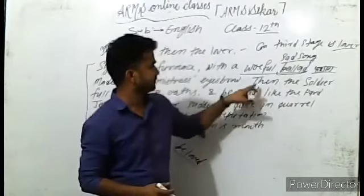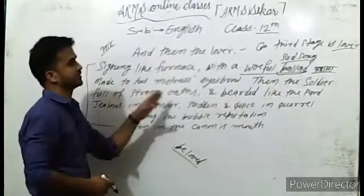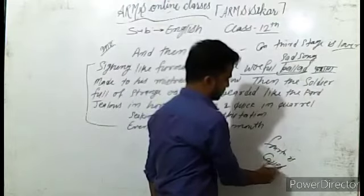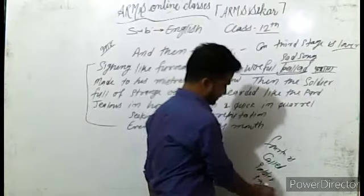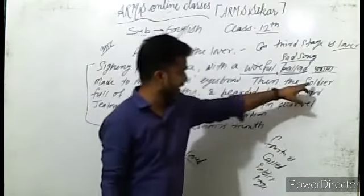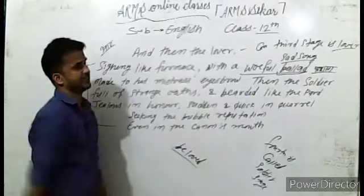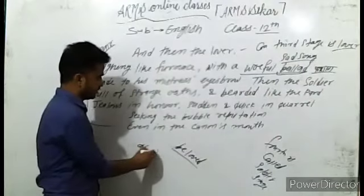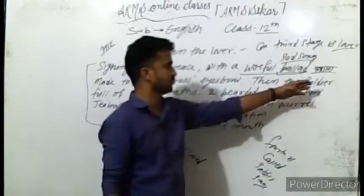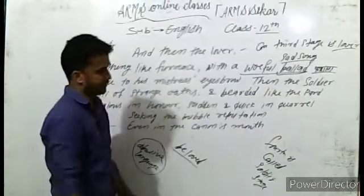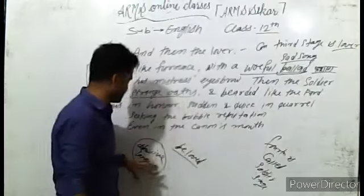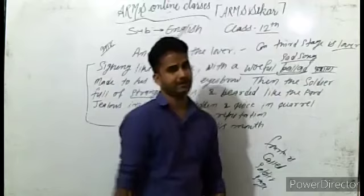And then the soldier. Full of strange oaths. The fourth stage is called soldier. The poet is conveying that the fourth stage of a man according to Shakespeare is as a soldier. Full of strange oaths. Strange oaths means abusing language.